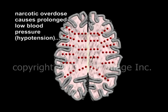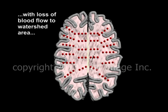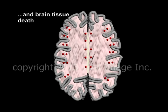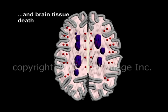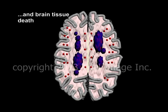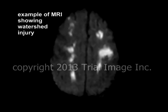It therefore follows that when there is a generalized loss of blood flow to the brain, such as in narcotic overdosage, the watershed areas of each hemisphere are particularly susceptible to ischemia and stroke. Seen from above in both our animation and in an MRI, watershed stroke has a very characteristic appearance.